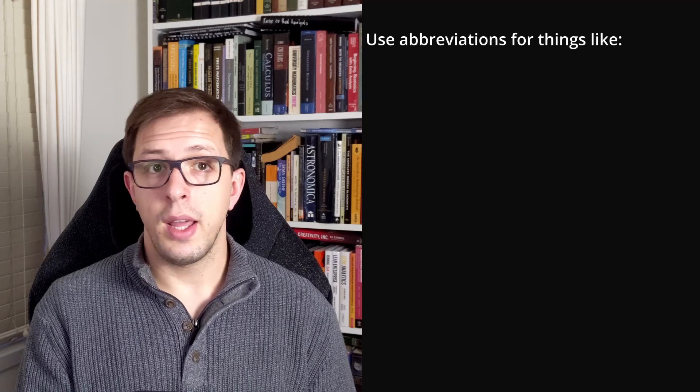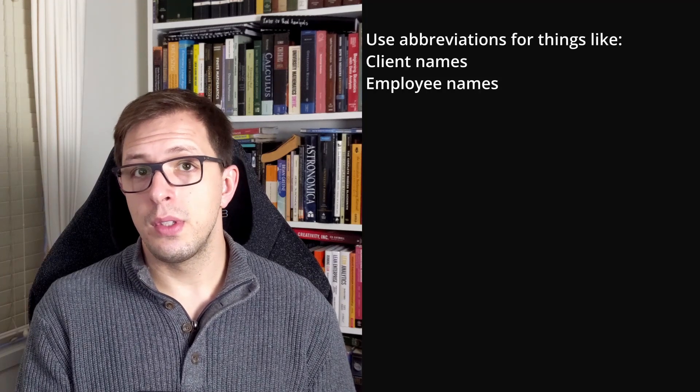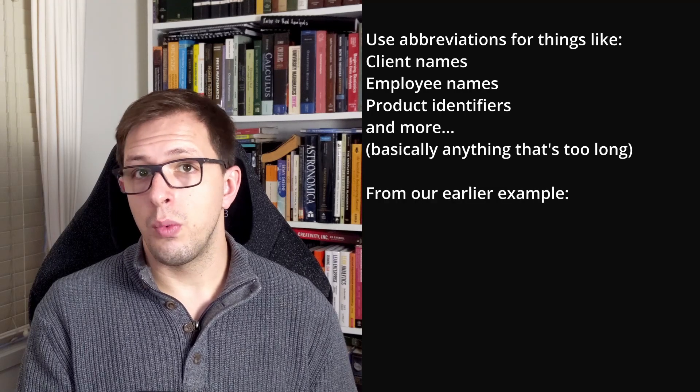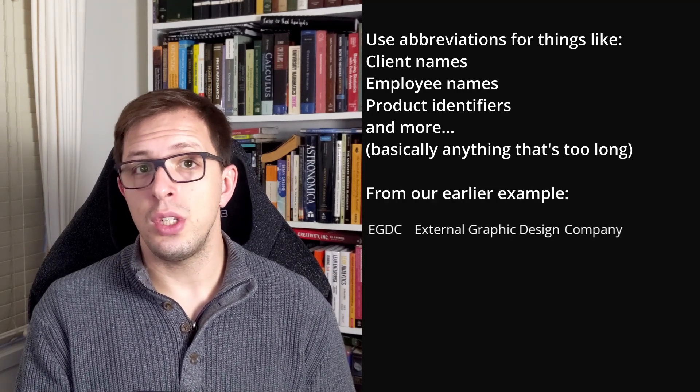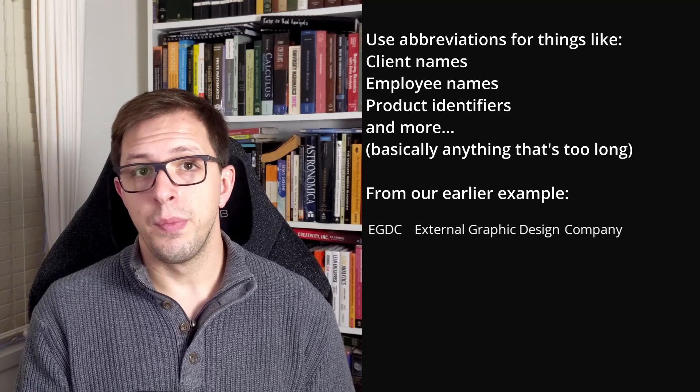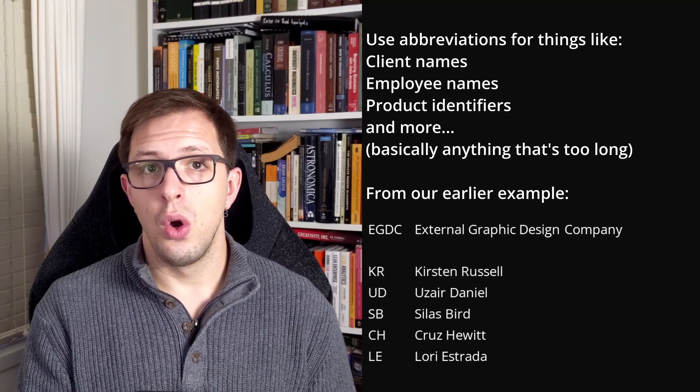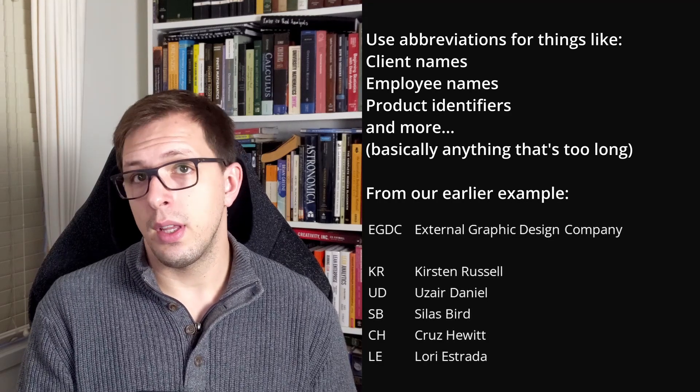To keep things concise, use abbreviations for things that are too long. This includes client names, employee names, product identifiers, etc. In our example earlier, we abbreviated external graphic design company to EGDC. Similarly, we can abbreviate names to initials, either first or last, or first, middle, and last in the case of a clash.